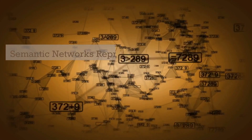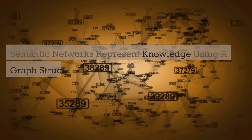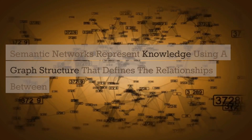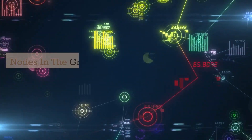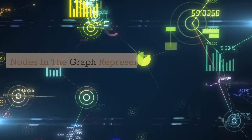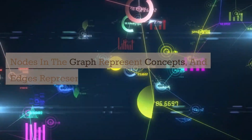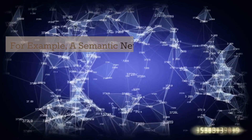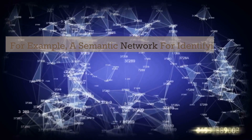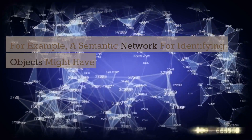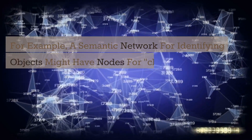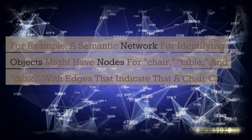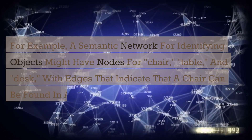Semantic networks represent knowledge using a graph structure that defines the relationships between objects in the world. Nodes in the graph represent concepts, and edges represent the relationships between them. For example, a semantic network for identifying objects might have nodes for chair, table, and desk, with edges that indicate that a chair can be found in a room.